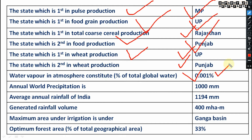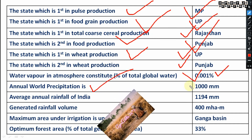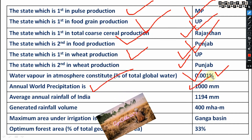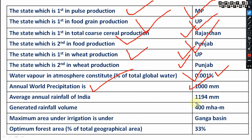Water vapor in the atmosphere constitutes 0.001 percent of total global water. The annual water precipitation is 1000 millimeters, and the average annual rainfall of India is 1194 millimeters.